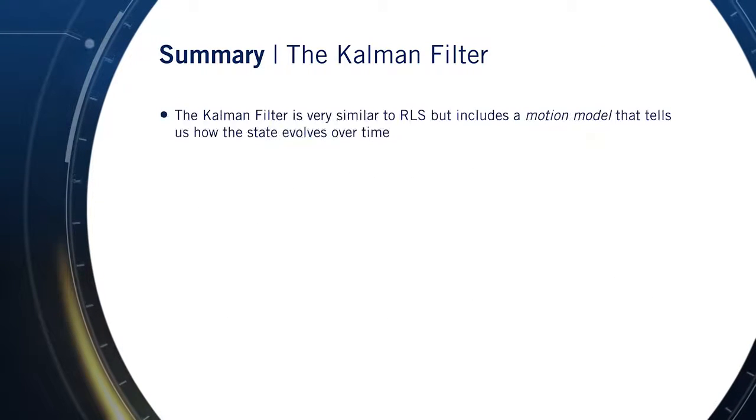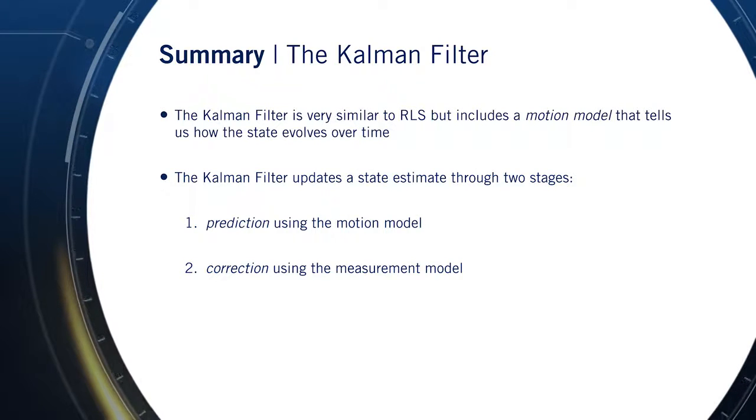To summarize, the Kalman filter is similar to recursive least squares, but also adds a motion model that defines how our state evolves over time. The Kalman filter works in two stages. First, predicting the next state using the motion model, and second, correcting this prediction using a measurement.